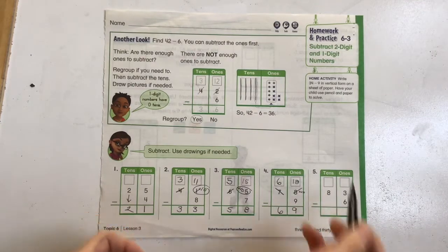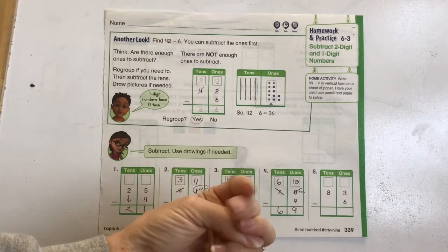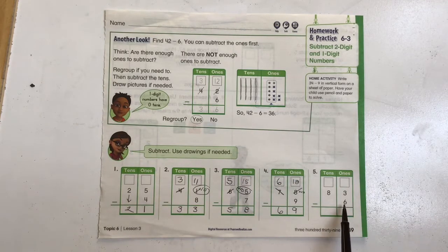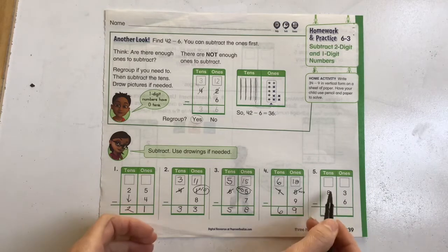Okay, number 5. We've got 3 minus 6. Again, it's not going to work because that number is smaller that's above the number below it. So we're going to need to regroup.